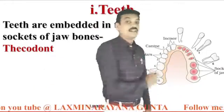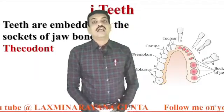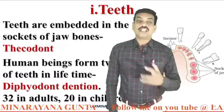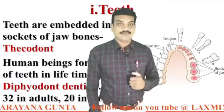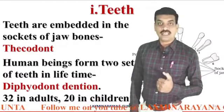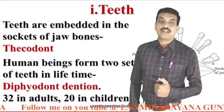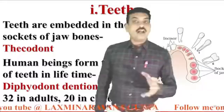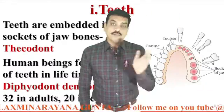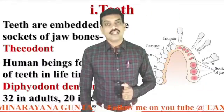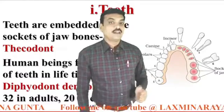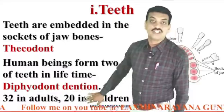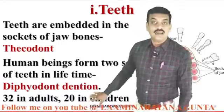Human beings form two sets of teeth in our lifetime, hence human teeth are called diphyodont dentition. We have a set of teeth before 12 years, called milk teeth. They are 20 in number in children.